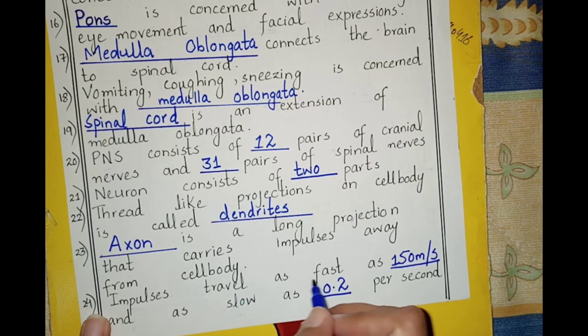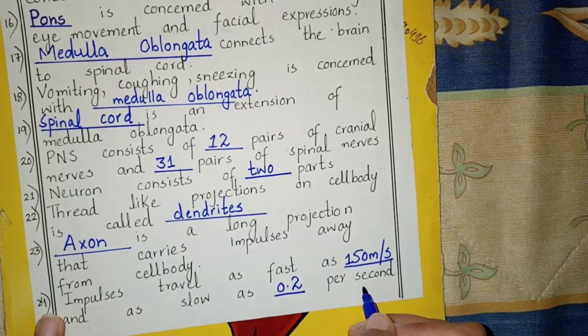Axon is a long projection that carries impulses away from the cell body. Impulses travel as fast as 150 meters per second and as slow as 0.2 meters per second.